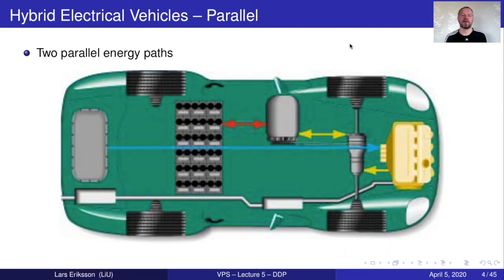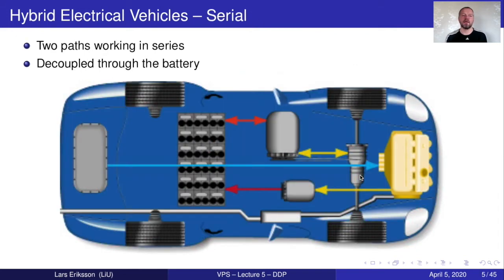I go back to the parallel hybrid and talk shortly about the basic properties. In the parallel hybrid the engine is connected to the wheels so we cannot select the engine speed independently of what the vehicle is doing. While in the serial hybrid the engine is decoupled from the wheels so we can place the engine operation at an arbitrary point that's preferably good.